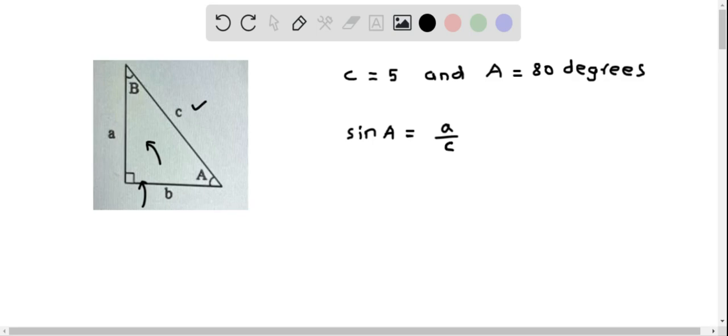Now let us substitute the values. We know that A is 80 degrees. So this becomes sin of 80 degrees. This is in degrees, and this equals A over C is 5. So we multiply both sides by 5 and determine A. So A equals 5 times sin 80.